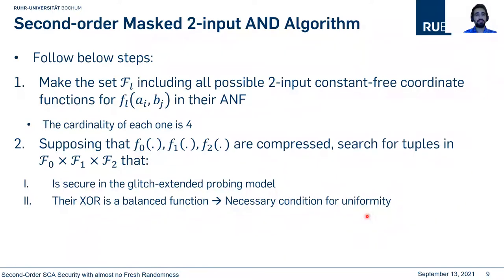To this end, we follow these steps. We make the set FL — F0 to F8 — because we have nine component functions, each of which includes all two-input constant three-coordinate functions. For example, for F0, which takes A0 and B0, we have four different coordinate functions: A0·B0, A0·B0 + A0, A0·B0 + B0, and A0·B0 + A0 + B0. The cardinality of each set is one.